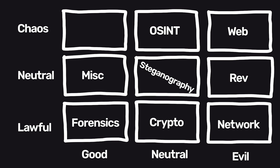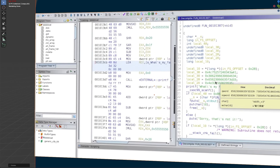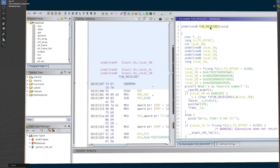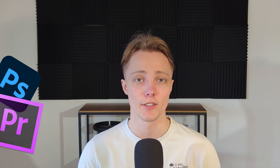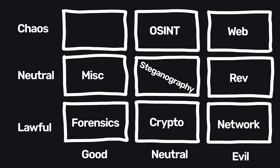In these events, you can find a variety of challenge categories. REV, short for reverse engineering, consists of decompiling a software file to make the program do anything you want it to — basically for people who want to learn how to crack paid subscription software so they don't have to pay for it, which is why it's in the neutral evil section.